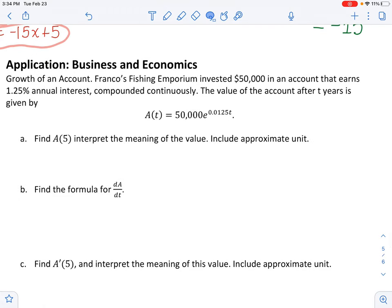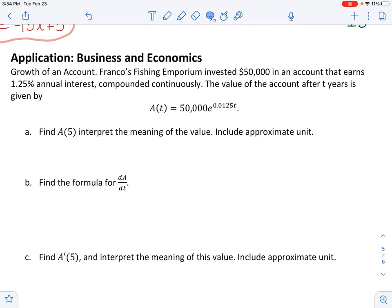So growth of an account. Franco's fishing emporium invested $50,000 in an account that earns 1.25% annual interest compounded continuously. I'm just reading it because they already gave us the equation. I was going to write this myself, but hey, they gave it to us already. The value of the account after t years is given by this equation.